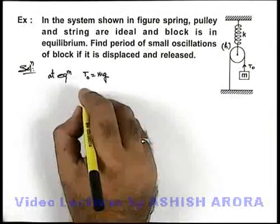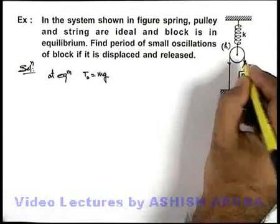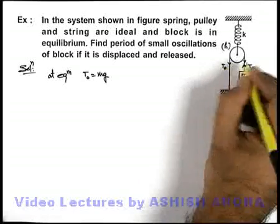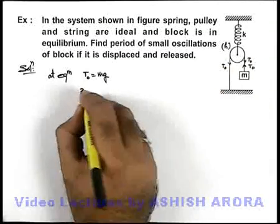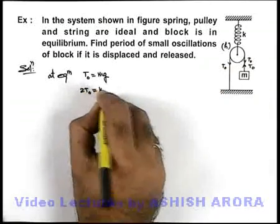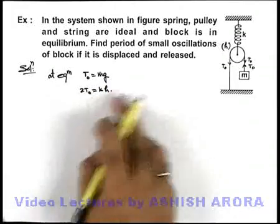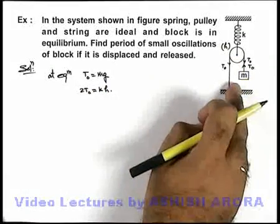And say the spring is having an extension h in it. So we can write that as pulley is ideal, the total downward force acting on it would be 2T₀, and we will be having 2T₀ will be equal to kh, if h is the extension in spring at equilibrium position.